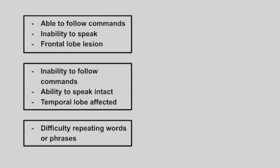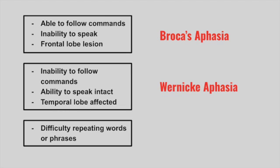Next is a patient who is able to follow commands but has an inability to speak, with a frontal lobe lesion. This is Broca's aphasia. The next patient has an inability to follow commands but their ability to speak is intact, and the temporal lobe is affected. This is Wernicke's aphasia. Next is a patient with difficulty repeating words or phrases. This is conduction aphasia, affecting the tract that connects Broca's and Wernicke's areas.